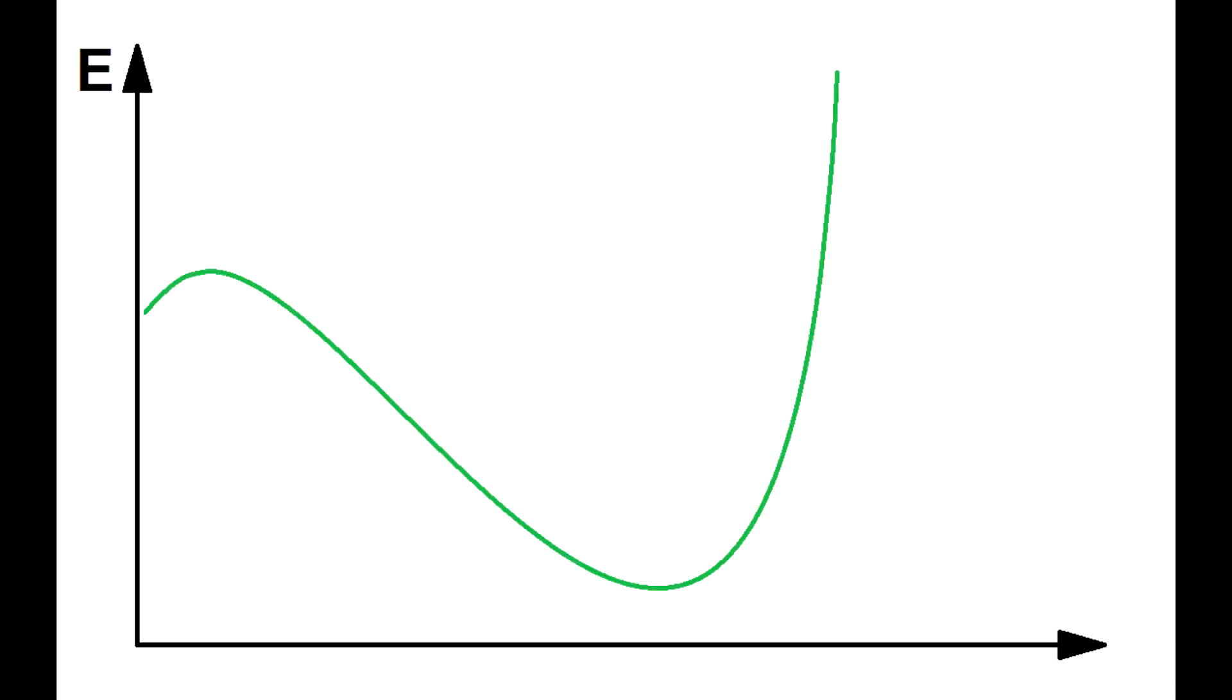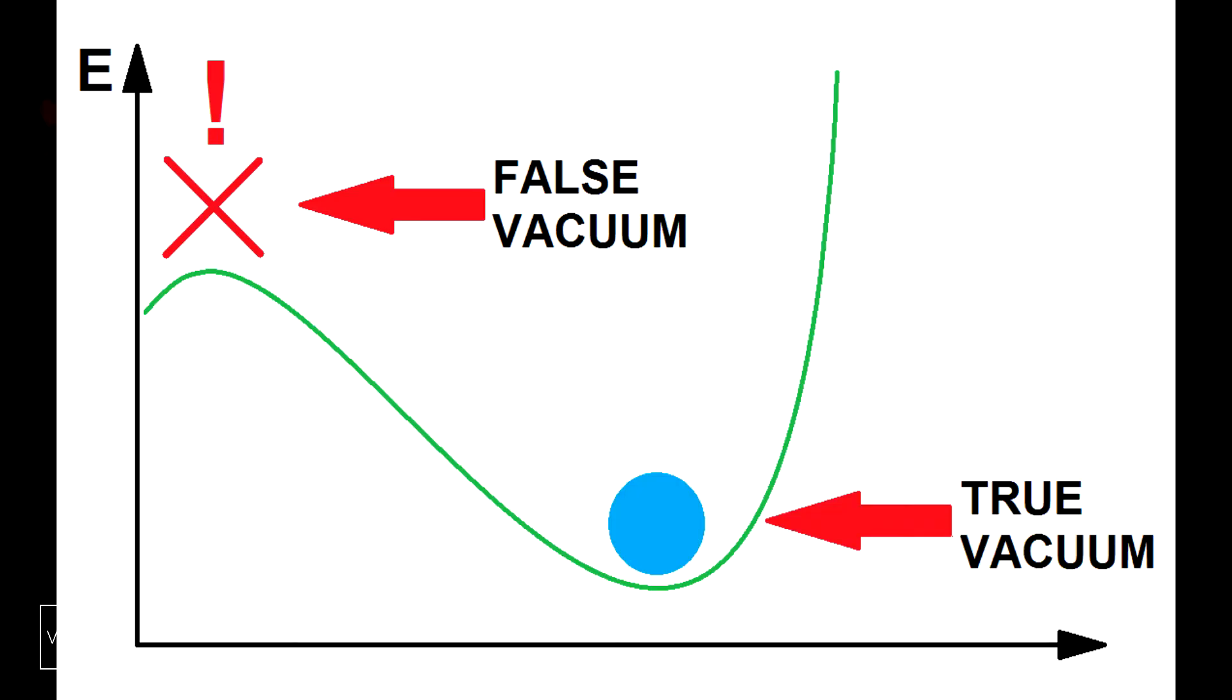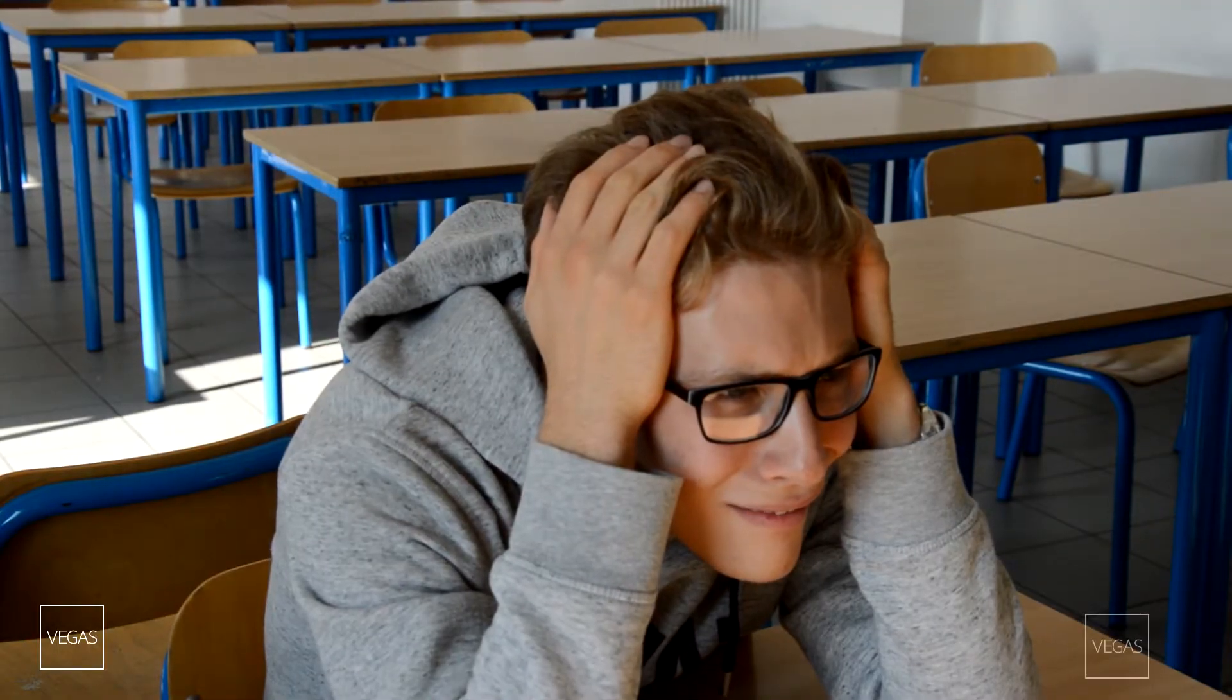But some fields like the Higgs field have a different structure, like this one. We've got a false vacuum with no particle, but with an energy level that's not the minimum one. And a true vacuum with the presence of a particle. Quantum mechanics is so crazy.